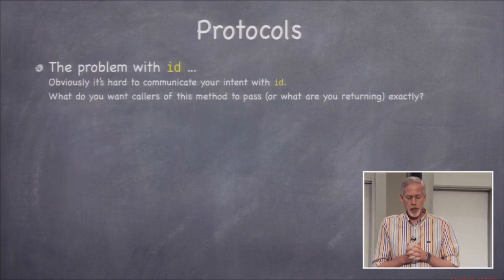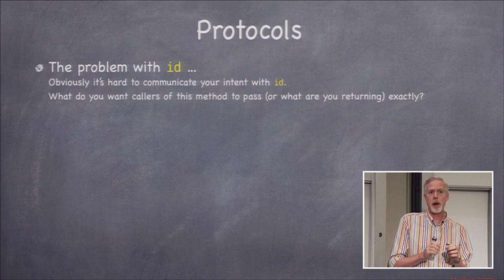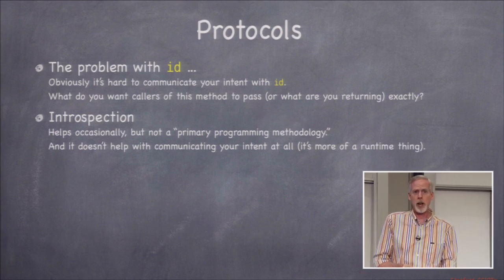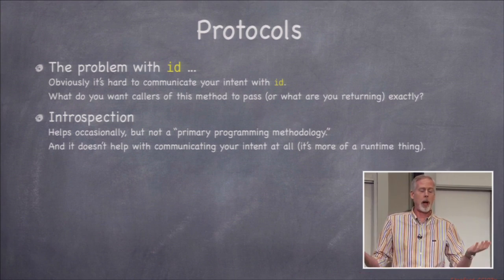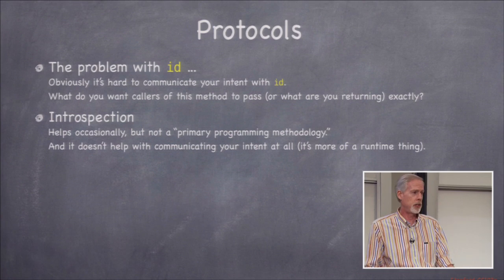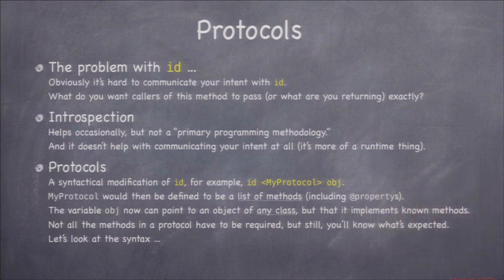The first Objective-C thing we're going to talk about is protocols. This is a way to make ID a little more useful by making it safer. We already have introspection to make ID safer — we know it's a pointer to some object, and we can use introspection at runtime to ask what kind of object it is and what methods it responds to. But protocols let us document, in a way both the reader and the compiler can understand, what methods we plan to call on that ID. It's basically just compiler syntax — nothing more.